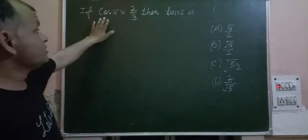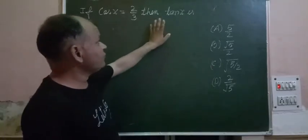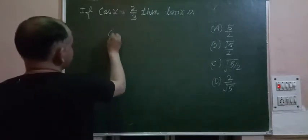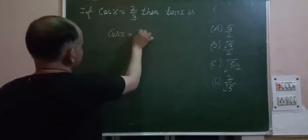if cos x equals 2 by 3, find tan x. So student, as you know that cos x equals 2 by 3,